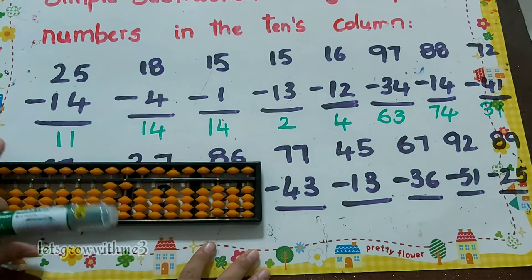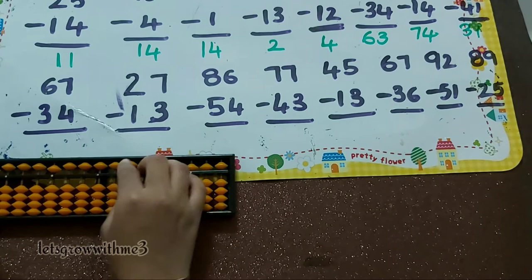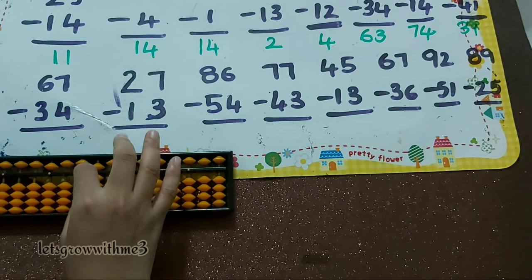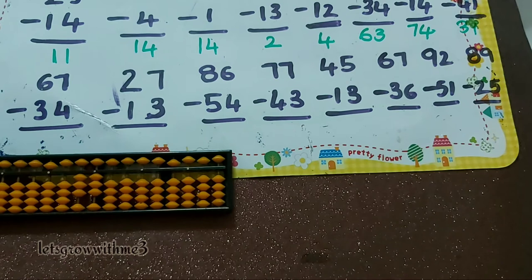Next one, 67 minus 34: minus 3, how to do minus 3? Minus 5 plus 2. Next, minus 4: minus 5 plus 1. So the answer is 33.